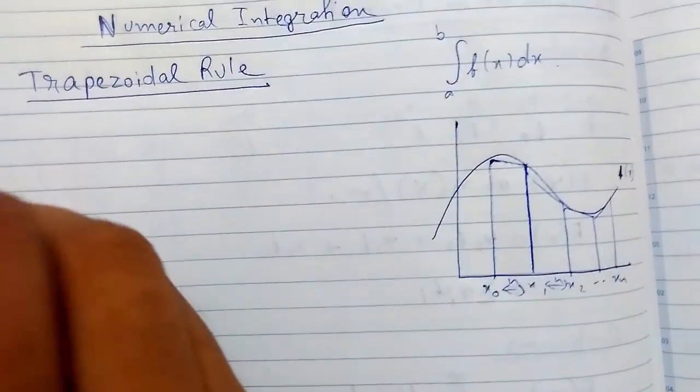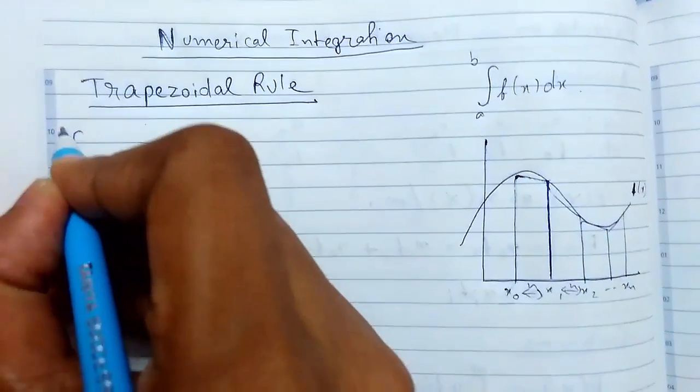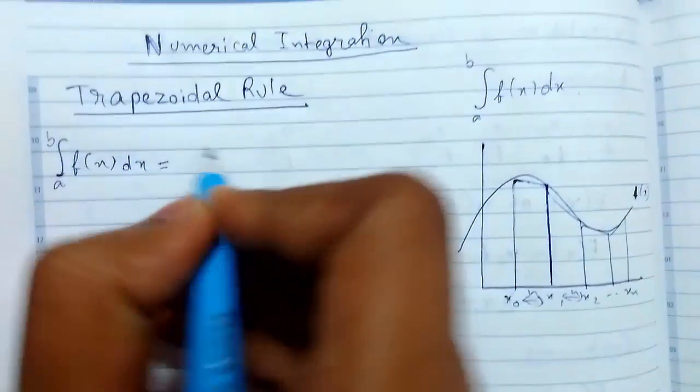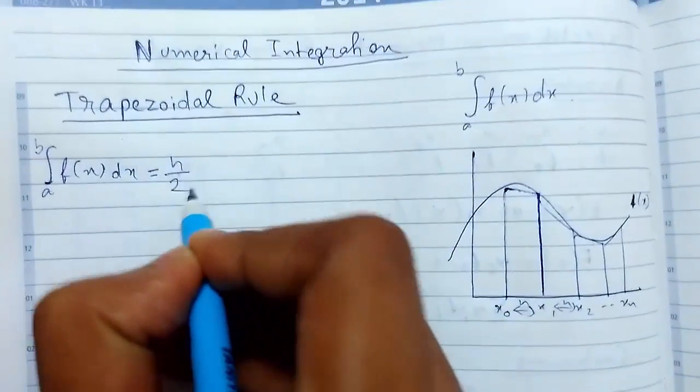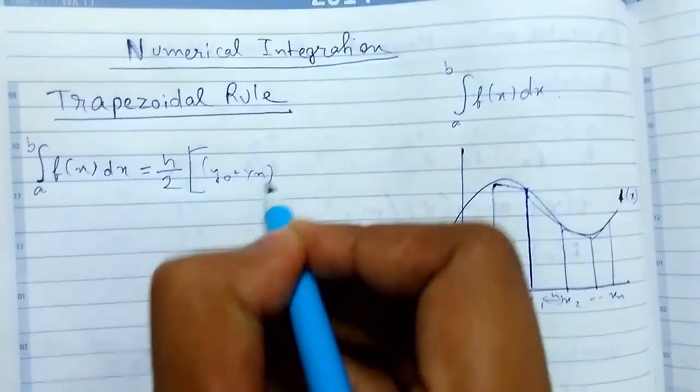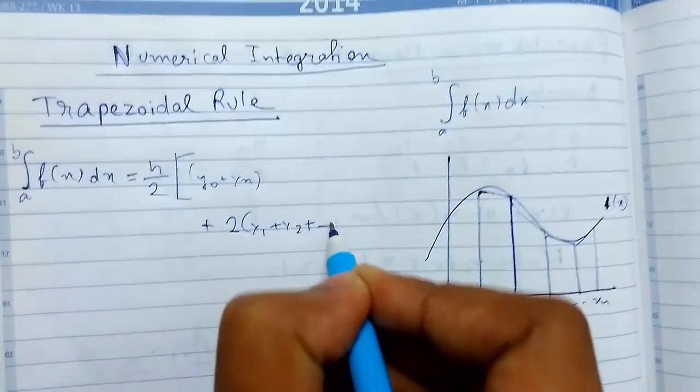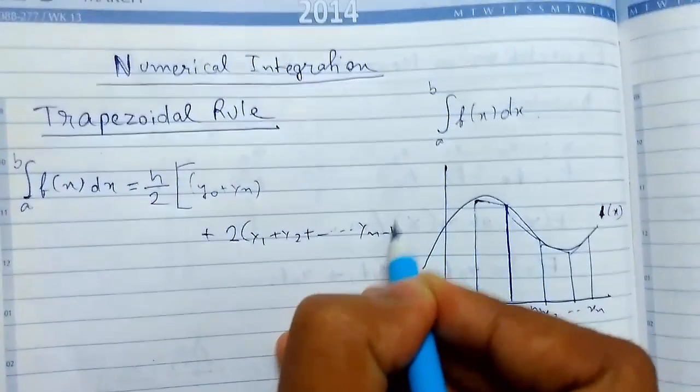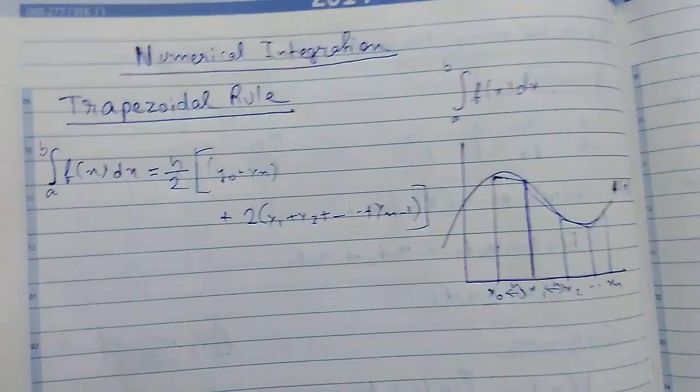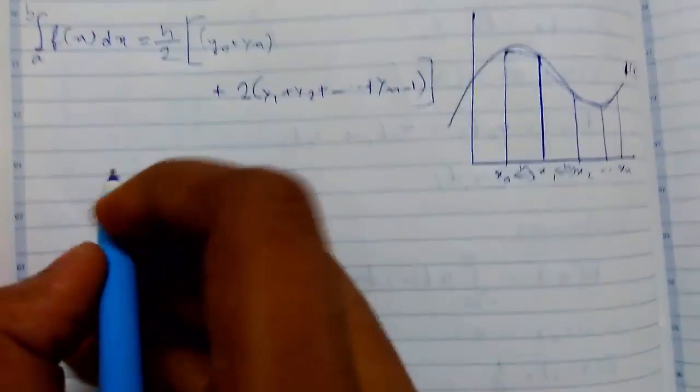The formula is: integration from a to b of f(x)dx can be written as (h/2) times [y0 + yn + 2(y1 + y2 + ... + yn-1)]. This is the formula. I will explain everything. You can divide it into steps.